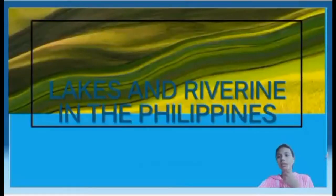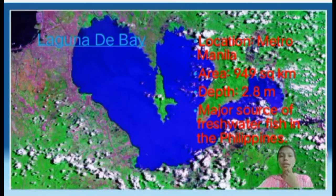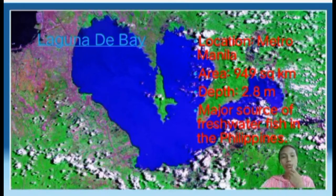Let's discuss the dynamics of lakes in the Philippines. The largest lake is Laguna de Bay, located in Metro Manila. It has an area of 949 square kilometers and a depth of 2.8 meters. It has a W-shaped basin with three lobes, two peninsulas jutting from the north, and volcanic features including Laguna Caldera and Island Talim in the middle. It has 21 tributaries, with the Pasig River as its major outflow, and it is the major source of freshwater fish in the Philippines.